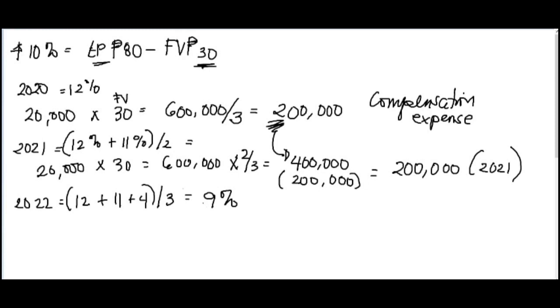So when it doesn't satisfy 10, the original exercise price is used, which is 100 pesos. And if the exercise price is 100 pesos, the fair value is actually at 25 pesos. So let's go. Let's compute. 20,000 times 25 is equal to 500,000.